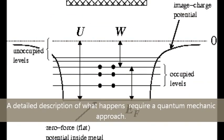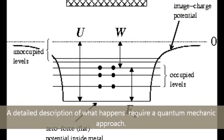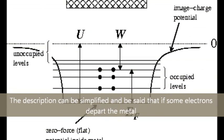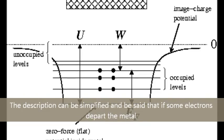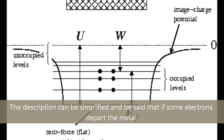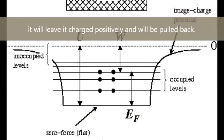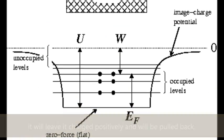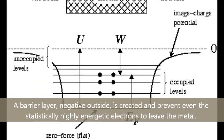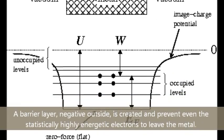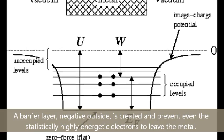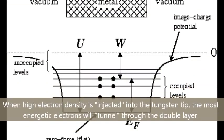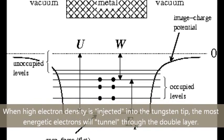A detailed description of what happens requires a quantum mechanical approach. The description can be simplified and be said that if some electrons depart the metal, it will leave it charged positively and will be pulled back. A barrier layer, negative outside, is created and prevents even the statistically highly energetic electrons from leaving the metal.